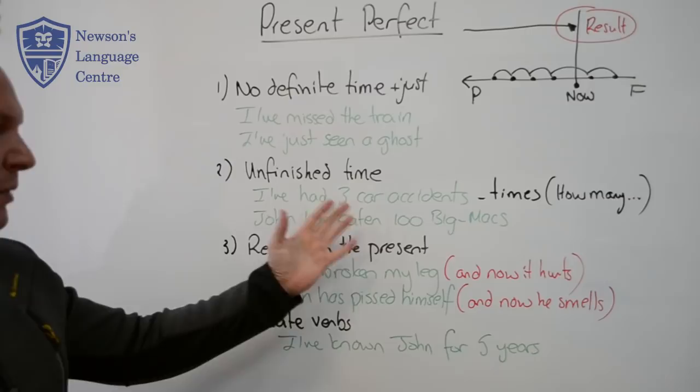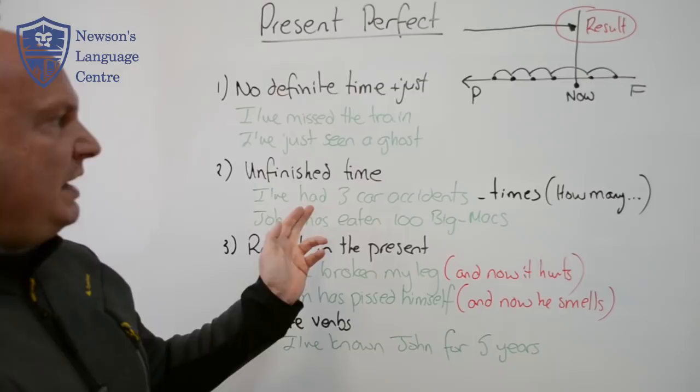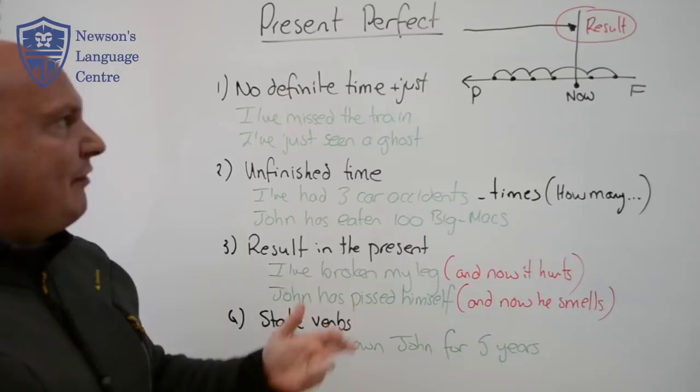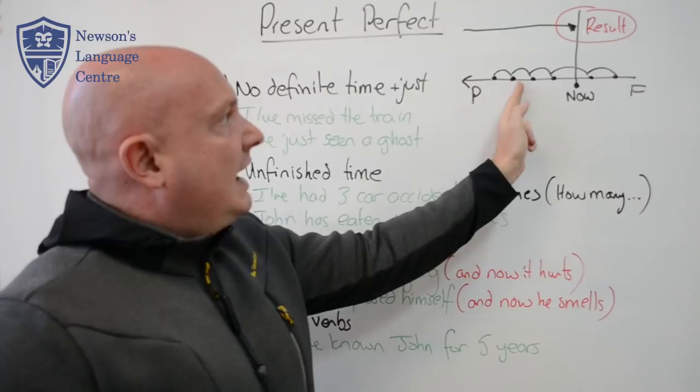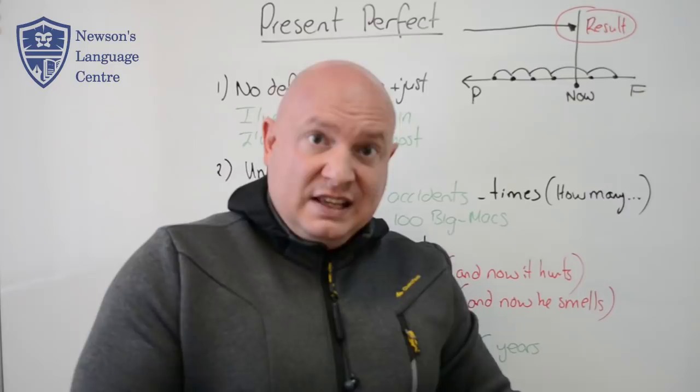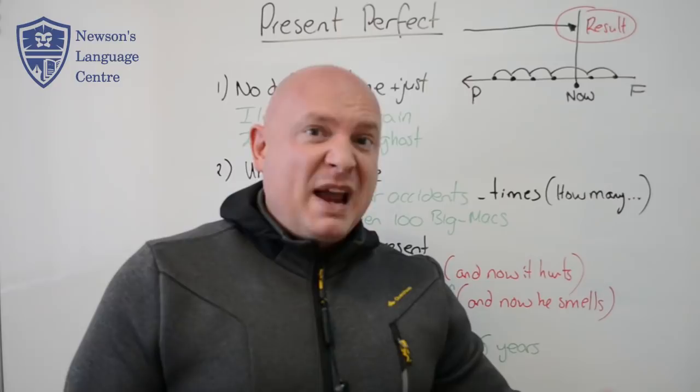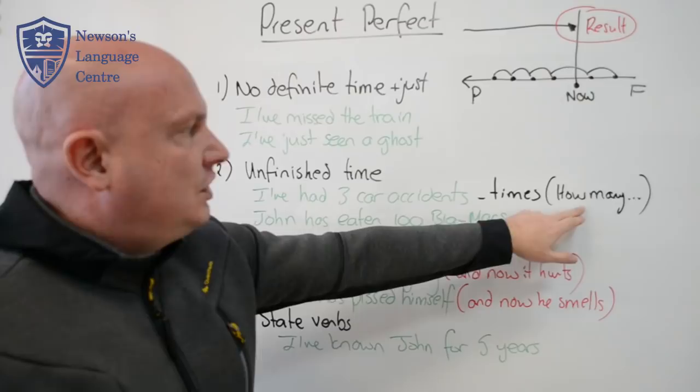Next we've got unfinished time. This one is very important for the present perfect. If I say 'I've had three car accidents' or 'I've been involved in car accidents three times,' then we use the present perfect. The reason we say unfinished time is that maybe something starts in the past and even though it's happened three or four times, it can still happen in the future — we see this as unfinished. So if I say 'I've had three car accidents' — because I'm a bad driver — maybe I'll have another three accidents in the future. Or maybe I'll die, who knows.